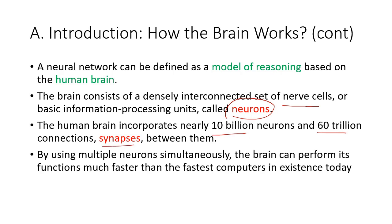By using multiple neurons simultaneously, the brain can perform its functions much faster than the fastest computers in existence today. Currently, there is no supercomputer in existence that can triumph over the human brain.